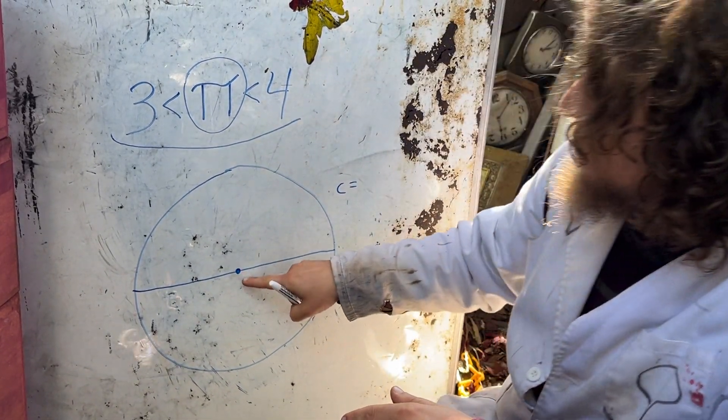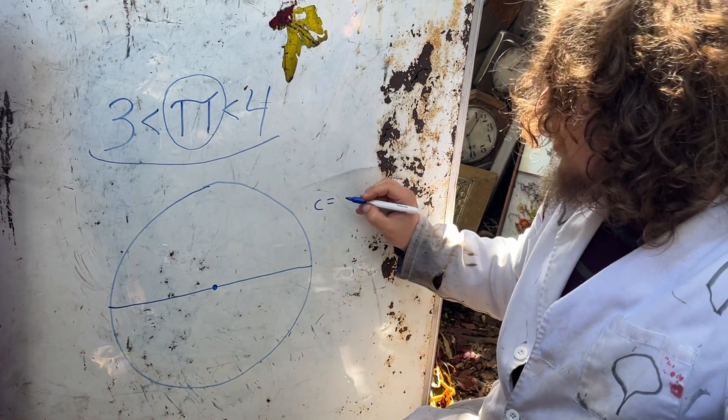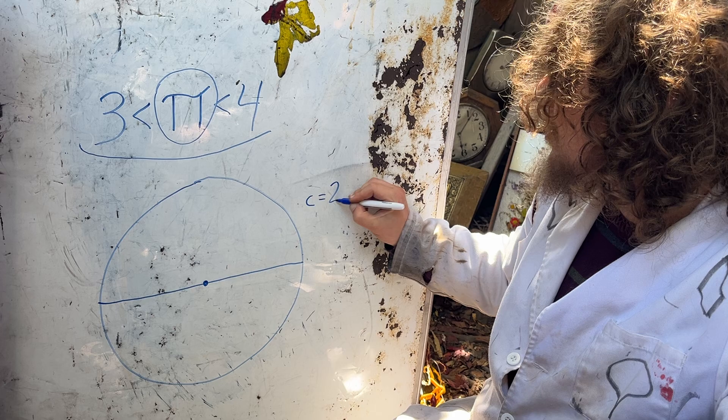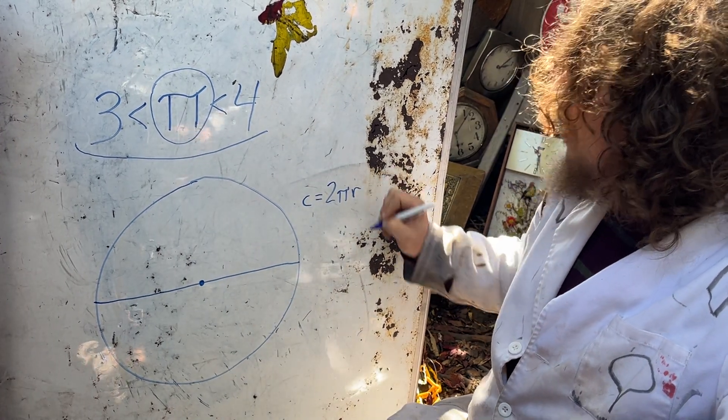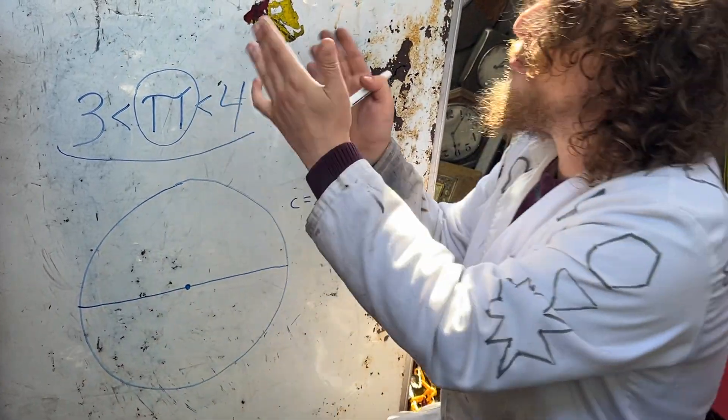Although we're going to be describing it in terms of the radius, which is half of the diameter. So we're saying the circumference is 2πr, and we want to know what pi is, or at least some range.